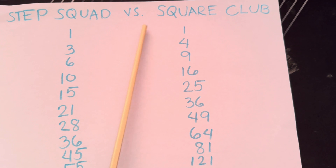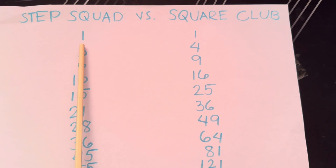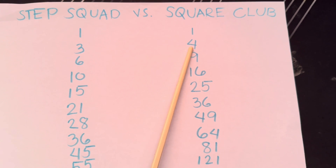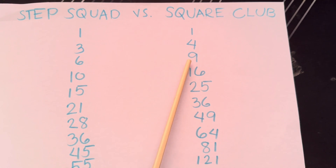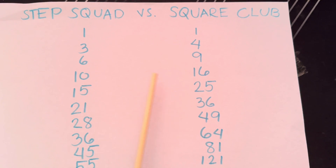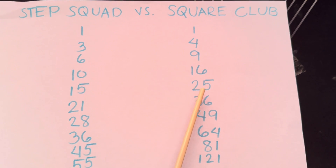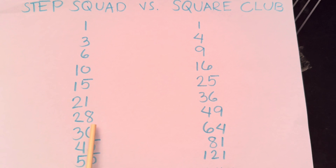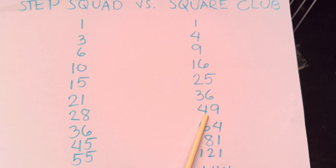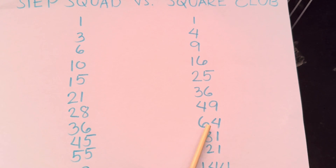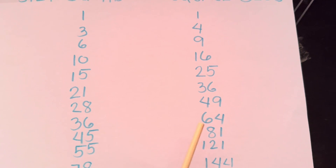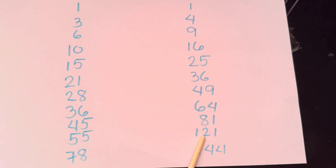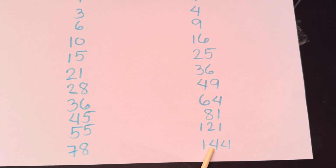Step Squad vs Square Club. 1, 1, 3, 4, 6, 9, 10, 16, 15, 25, 21, 36, 28, 49, 36, 64, 45, 81, 55, 121, 78, 144.